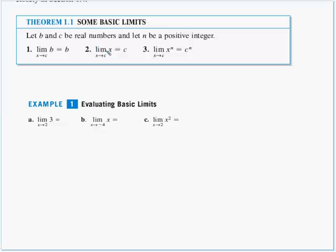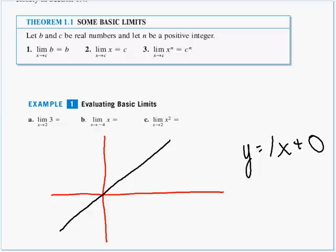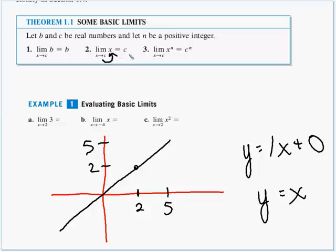Next, the limit as x approaches c of x is just equal to c. This is easier to see graphically — y equals x is a line going through the origin. If I plug in an x value of 2, I get an output of 2. The same for 5: if I put 5 in for x, my y value comes out as 5. So the limit of x as x approaches c is just c — we plug that c in place of x.